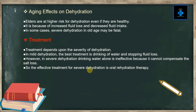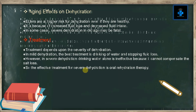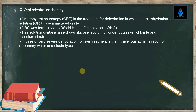Treatment for dehydration: Treatment depends upon the severity of dehydration. In mild dehydration, the best treatment is drinking water and stopping fluid loss. However, in severe dehydration, drinking water alone is not effective because it cannot compensate for the salt loss. So the effective treatment for severe dehydration is oral rehydration therapy.